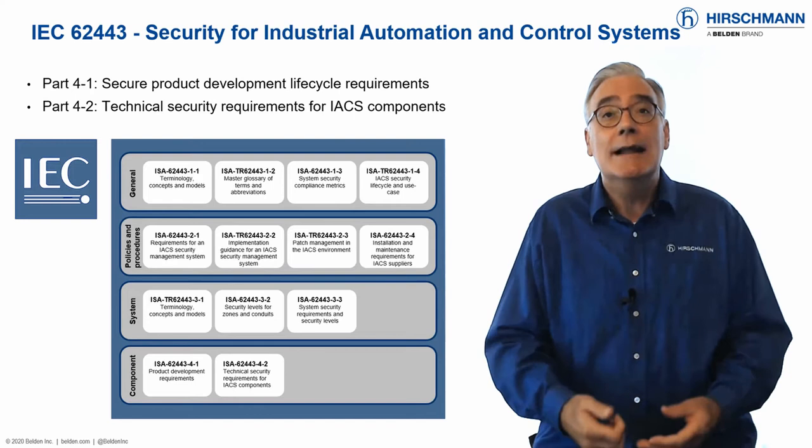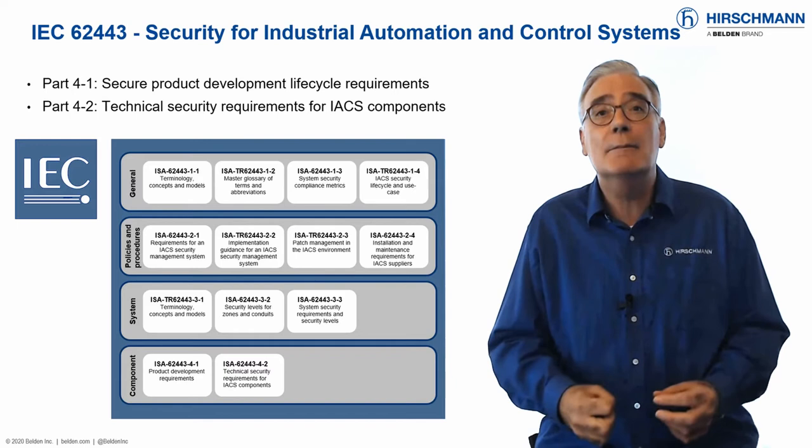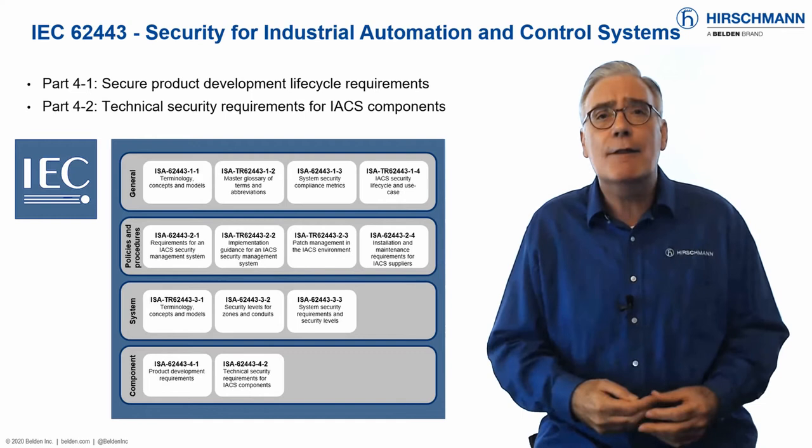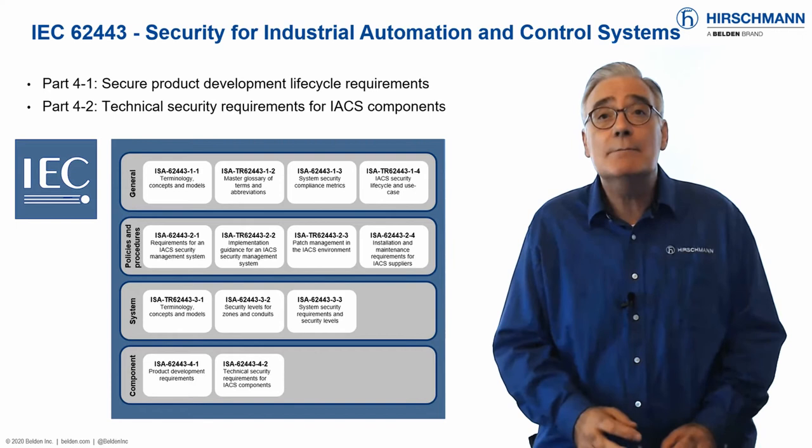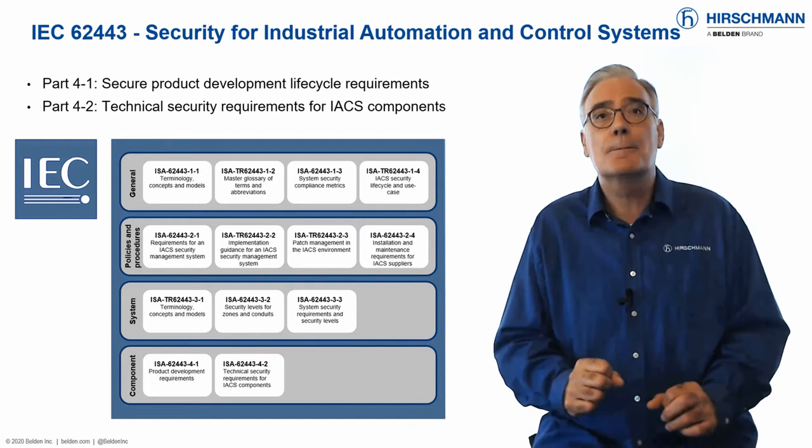IEC 62443-4-2 is a product standard which defines the cybersecurity technical requirements for components that make up an IACS — specifically the embedded devices, network components, host components, and software applications. Products can only be certified once a manufacturer has passed the development process certification.